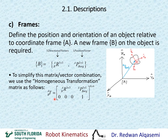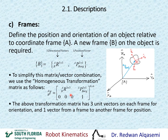I want you to distinguish between transformation and translation. When we talk about translation, we're talking only about position. When we talk about transformation, we're talking about both position and orientation combined. The transformation matrix has three unit vectors on each frame for orientation expressed in the rotation matrix, and one vector from one frame to another for position expressed as P of B origin relative to frame A.